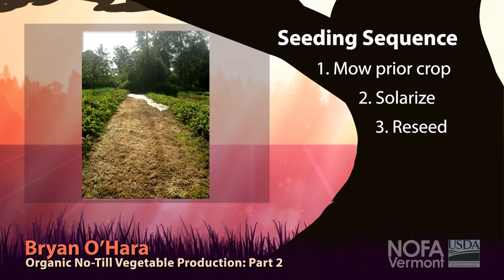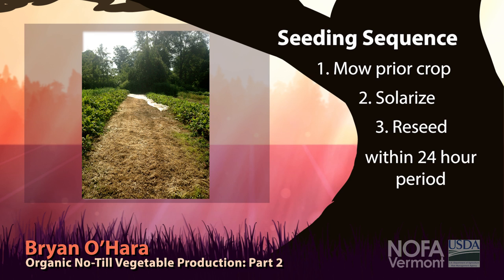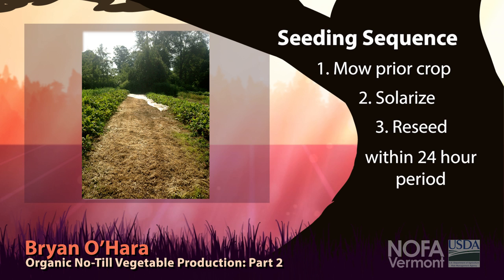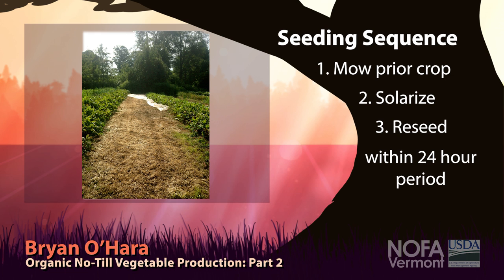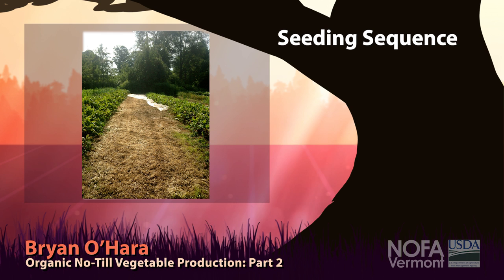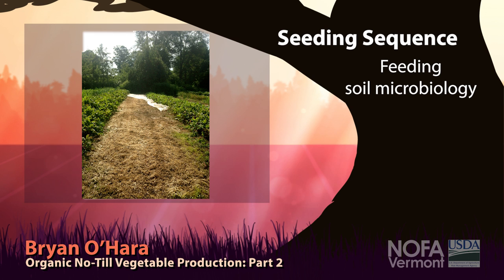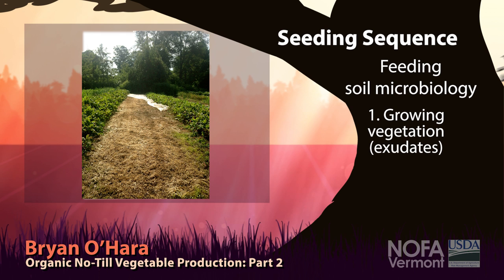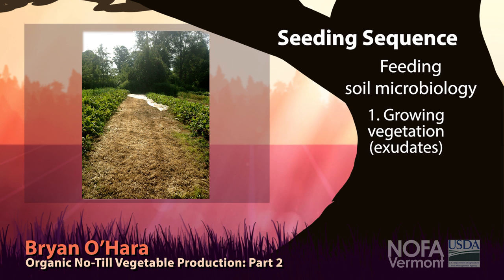It goes from one crop into another, often in a 24-hour period. We do that for a number of reasons — to maximize production, especially on this field where it's year-round vegetable production. There's never a break of more than 24 hours so that the soil microbiology is being constantly fed. There are two means to feed soil microbiology: growing vegetation, which fixes solar energy into sugars and other materials the plant exudes to feed the microbiology.